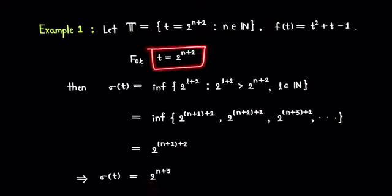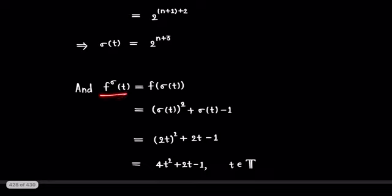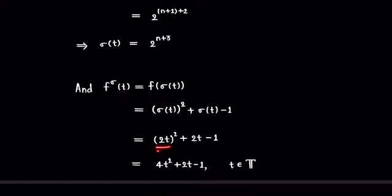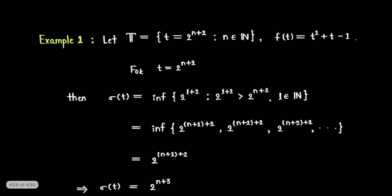For this t, we have found σ(t) = 2^(n+3). Now, f^σ(t) = f evaluated at σ(t) by definition. We have f^σ(t) = (σ(t))² + σ(t) - 1. Since 2^(n+3) = 2 · 2^(n+2) = 2t, we get σ(t) = 2t. Replacing σ(t) with 2t, we get f^σ(t) = (2t)² + 2t - 1 = 4t² + 2t - 1. This is the forward shift of the given function f for this timescale.